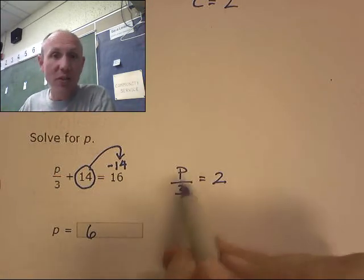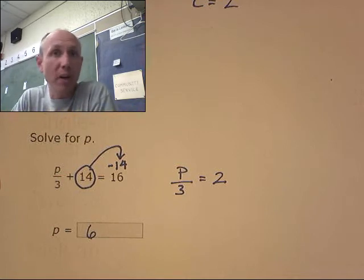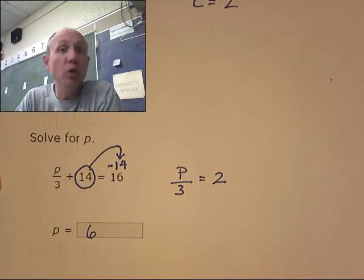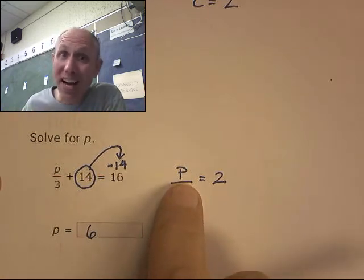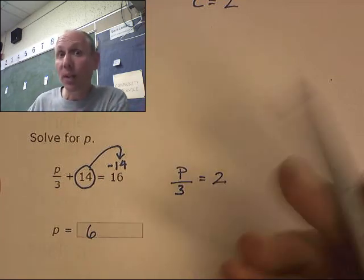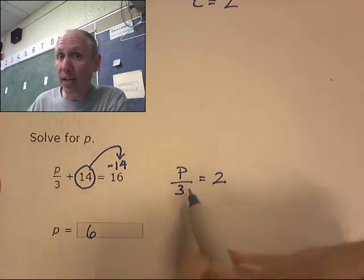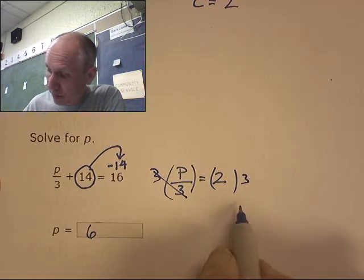So the answer is six. Six divided by three is two, but let's go through the math. Who is my variable? P. Who's bugging the P? The three. What's the three doing? It's trying to divide. How do I fight division? With multiplication. I would like to multiply both sides by three. And there's the six that we expected.